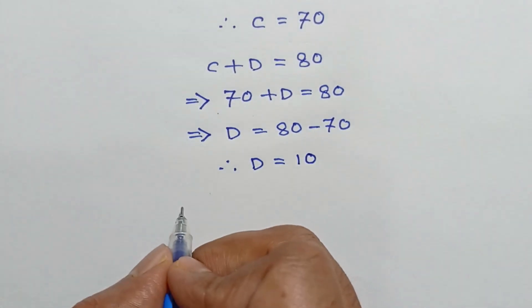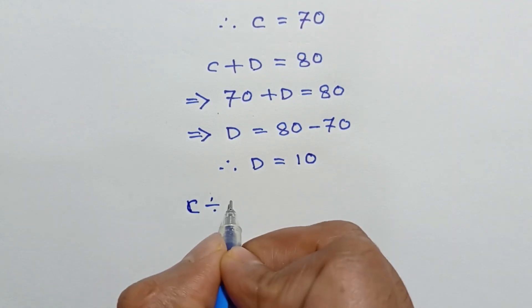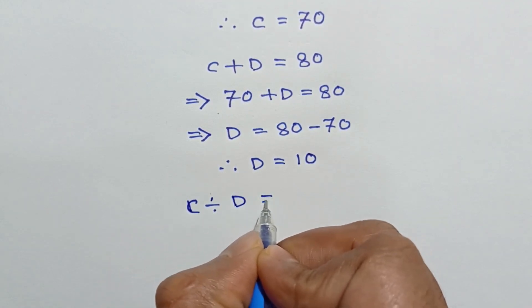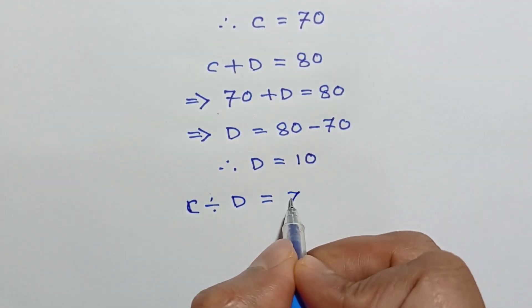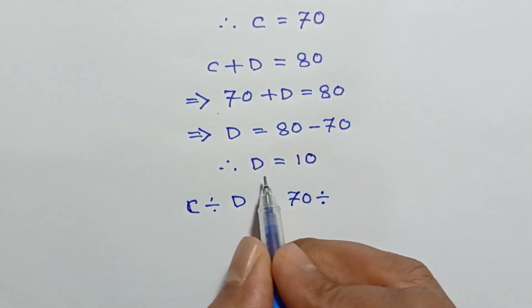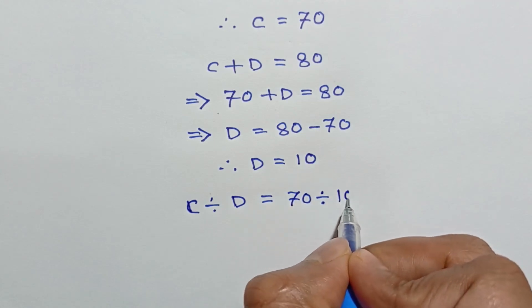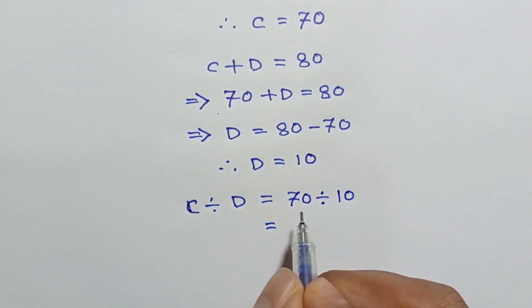So finally, the value of C divided by D is equal to 70 divided by D, which is 10. This equals 70 divided by 10, which is equal to 7.